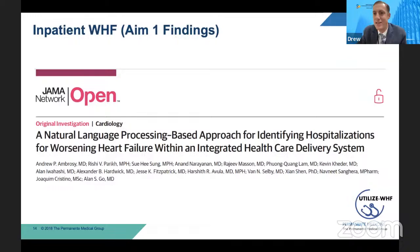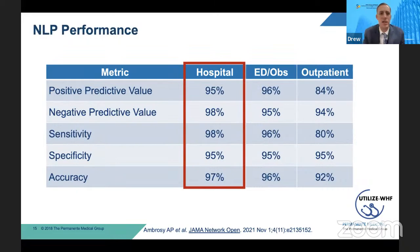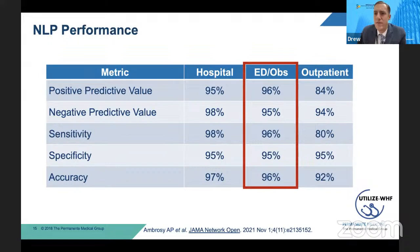Now that I've gone over the methods — the densest part of the presentation — let's jump into the results. Our aim one results were previously published in JAMA Network Open. The performance metrics of our NLP-based algorithms, when compared to the gold standard of manual chart review, were actually quite excellent. For hospitalizations, the positive predictive value, negative predictive value, sensitivity, specificity, and accuracy were all greater than or equal to 95%. When we looked at ED visits and observation stays, we found something very similar — performance metrics almost identical to hospitalizations.